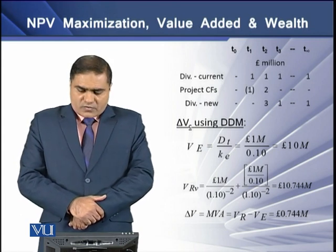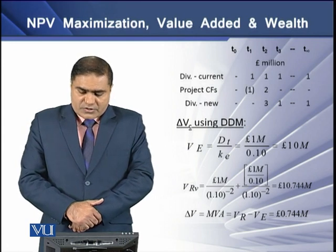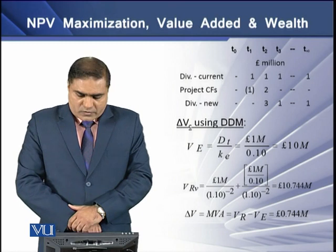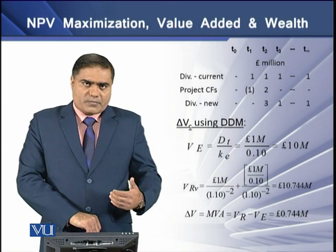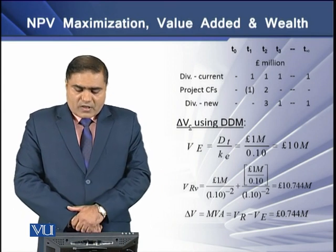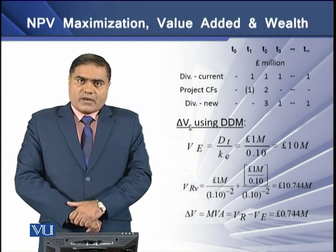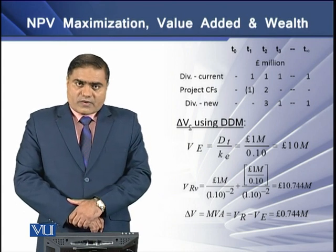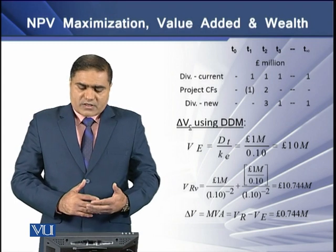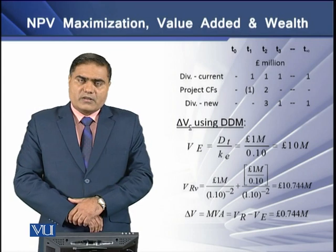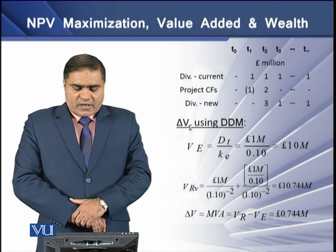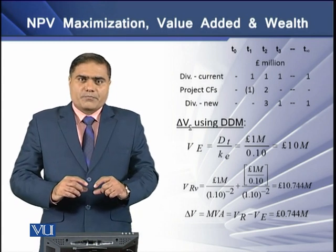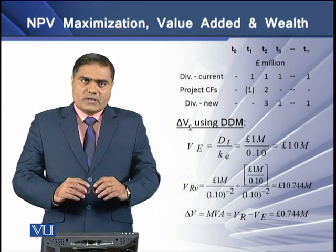Arranging the cash flows across time periods T0, T1, T2, T3 through infinity, the current year's dividend equals 1 million since the entire cash flow is paid as dividend. Project cash flows are negative in year T1 but positive in year T2 as cash flows return. Under the revised dividend policy, there is no dividend in T1 because inflows are reinvested in the project, but in T2 the dividend is 3 million — 1 million regular plus the 2 million project cost returned to shareholders.